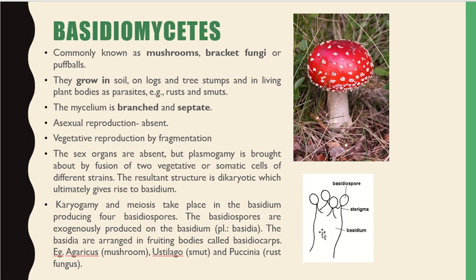Karyogamy and meiosis take place in the basidium, producing four basidiospores that are exogenously produced on the basidium. These are arranged in fruiting bodies called basidiocarps. Examples include Agaricus (mushroom), Ustilago, and Puccinia.